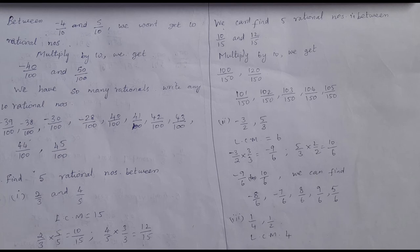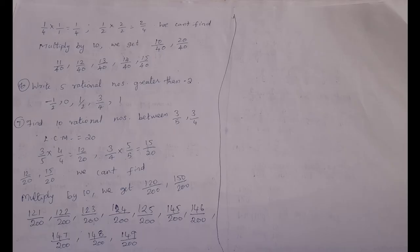Third sum: find 5 rational numbers between 1 by 4 and 1 by 2. Taking LCM of 4, we get 1 by 4 and 2 by 4. We can't find 5 rational numbers directly, so multiply by 10: we get 10 by 40 and 20 by 40. In between, we can easily find 5 rational numbers: 11 by 40, 12 by 40, 13 by 40, 14 by 40, and 15 by 40.